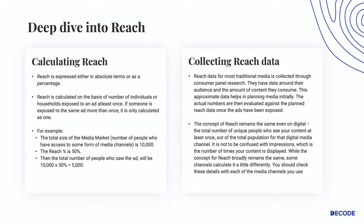It's important to understand how reach data is calculated. Reach data for most traditional media is collected through consumer panel research. They have data around the audience and the amount of content that audience is consuming. This approximate data helps in planning media initially, and the actual numbers are then evaluated against the planned reach data once the ads have been shown. The concept of reach remains the same even on digital — the total number of unique people who see your content at least once out of the total population of that digital media channel.